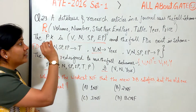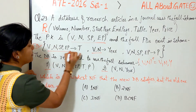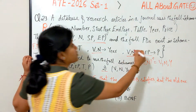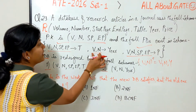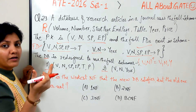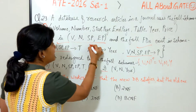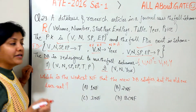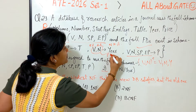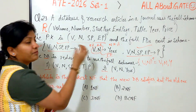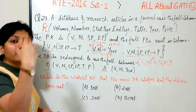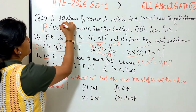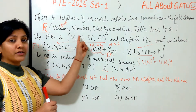Now quickly find out the normal form of the relation. The first and second FDs have the complete primary key in the determinant part — those are good dependencies, fine up to the BCNF level. However, volume and number are part of the primary key — key attributes but not the full key — and they are determining a non-key attribute. That makes it a partial dependency. A relation in 1NF with a partial dependency means the relation is only in 1NF.